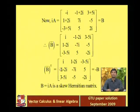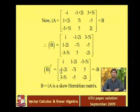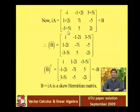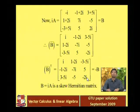You can see that the transpose of the conjugate of B is exactly minus B: i → minus i; minus 1 + 2i → 1 minus 2i; minus 3 + 5i → 3 minus 5i; 7i → minus 7i; minus 5 → 5; 5 → minus 5; 2i → minus 2i. So B-star = minus B, proving that B = i×A is a skew-Hermitian matrix. That completes this solution.